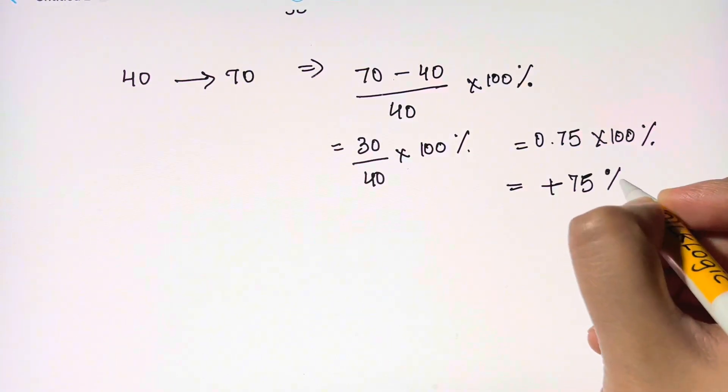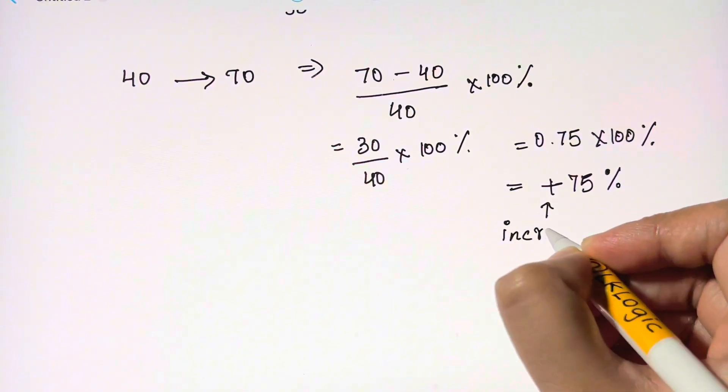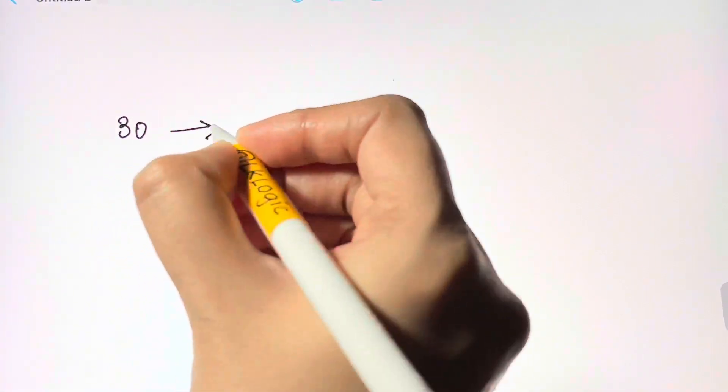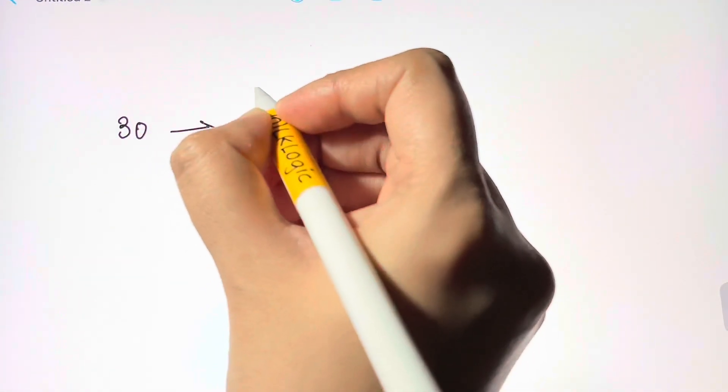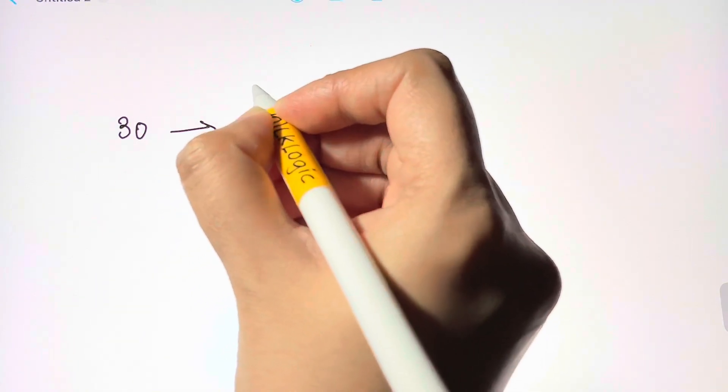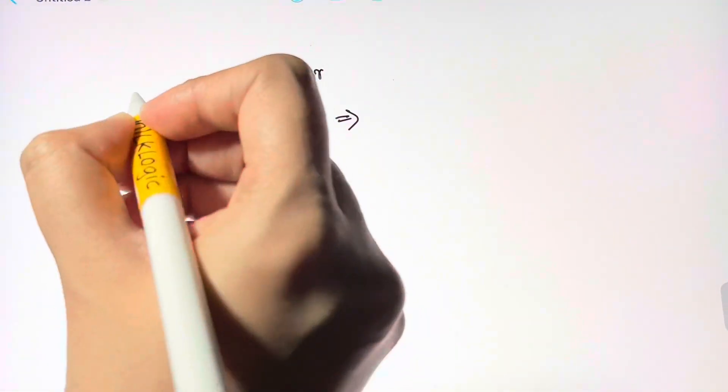And it's plus 75 percent because it's an increase. Let's see if there's an increase from 30 to 55. Whenever we are talking about percent increase, the new value is always larger and the original value is always smaller.